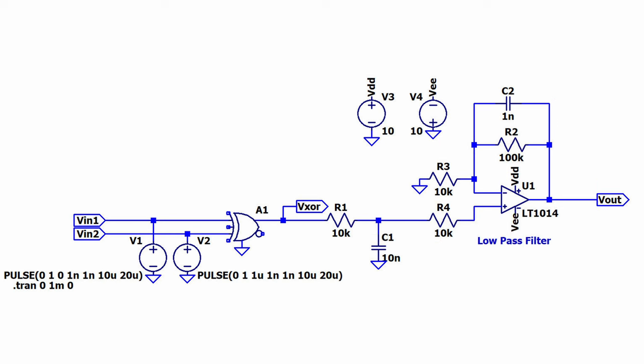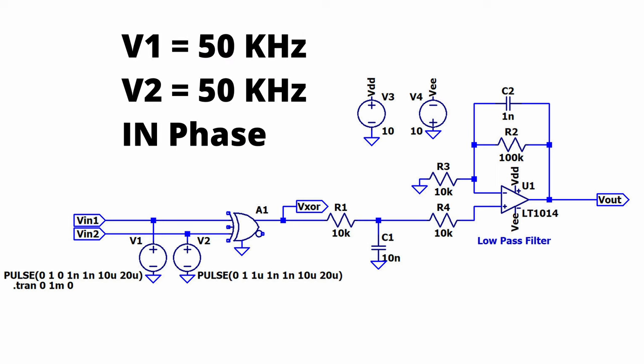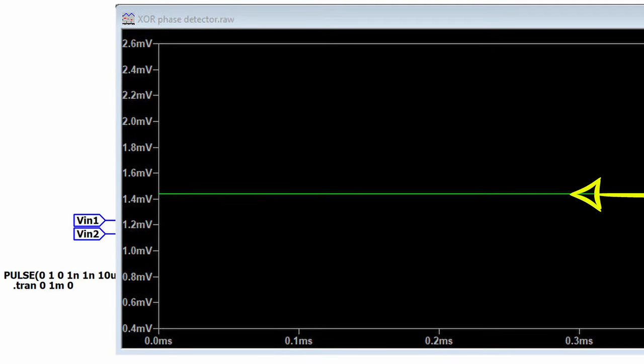In this first example, both signal sources are at the same frequency and the same phase. Notice the output of our phase detector. It is on the order of single-digit millivolts, and it is unchanging. And this little bit of DC voltage is due to the op-amp used as the amplifier and low-pass filter.